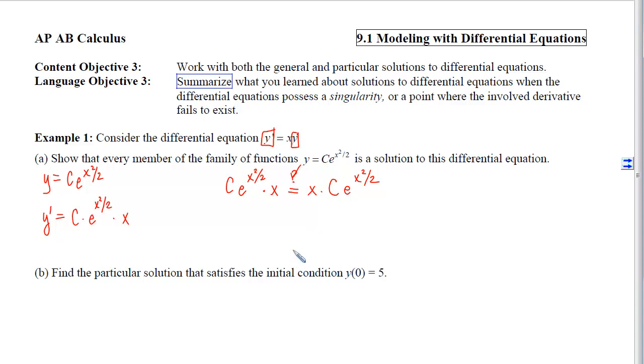With Part B now, we want to find the particular solution that satisfies this initial condition. So we already know that y equals c times e to the x squared over 2 is the general family of solutions, so now we want to simply plug in the point to solve for c. So we're going to let the output, which is y, be 5 when the input is 0. When we do that and simplify, we can see that c ends up equaling 5. So our particular solution is y equals 5 times e to the x squared over 2.